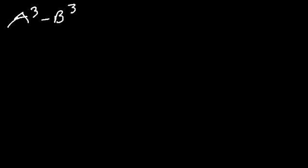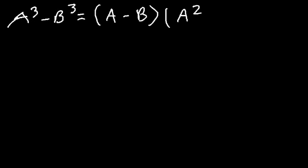Now let's work on examples using the difference of cubes formula. The formula is: a³ - b³ = (a - b)(a² + ab + b²).